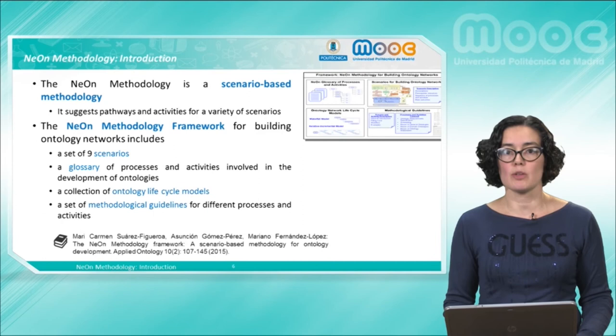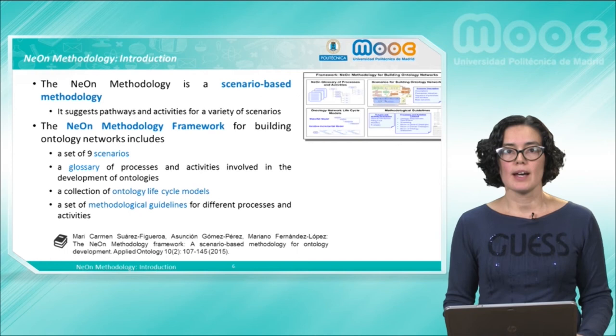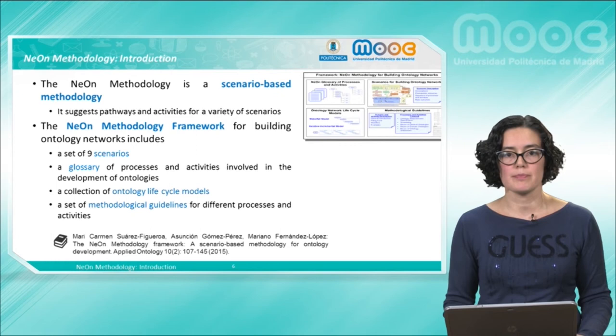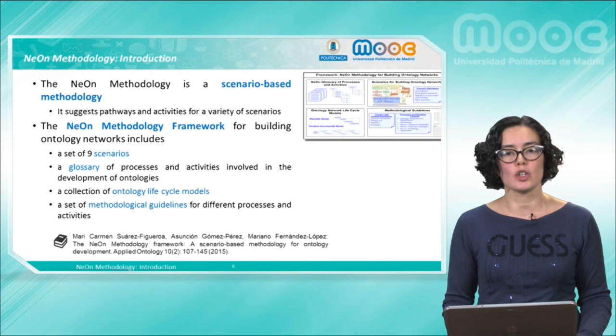The NeOn methodology framework provides a set of nine scenarios, which are explained in detail in Lesson 2, a glossary of processes and activities involved in the development of ontologies, a collection of life cycle models, and a set of methodological guidelines for different processes and activities. The aim of this framework is to speed up the development of ontologies by reusing available knowledge resources such as ontologies, non-ontological resources, and ontology design patterns.